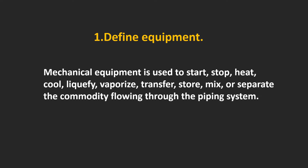Mechanical equipment is used to start, stop, heat, cool, liquefy, vaporize, transfer, store, mix, or separate the commodity flowing through the piping system.